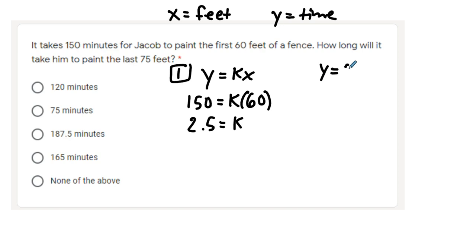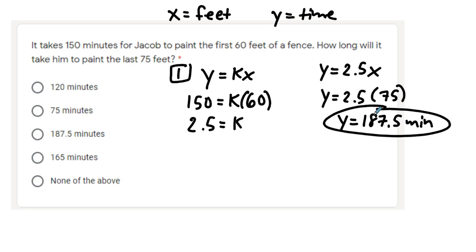Then use 2.5 to write the general equation for this situation. Put 75 in for x, and you're going to get 187.5 minutes. That should make sense. If you have more fence to paint, it needs to take more time. So that tells you it can't be one of these first two, it's got to be one of the last ones.